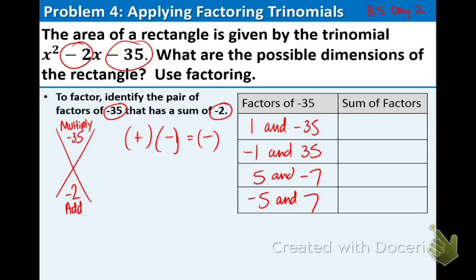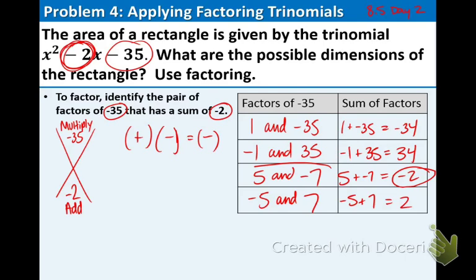Now let's add them. So 1 plus negative 35 equals negative 34. The number that we're looking for here is negative 2. Negative 1 plus 35 is positive 34. 5 plus negative 7 is negative 2. And negative 5 plus 7 is positive 2. Which one of those is negative 2? This pair right here. So 5 and negative 7 are our winners.